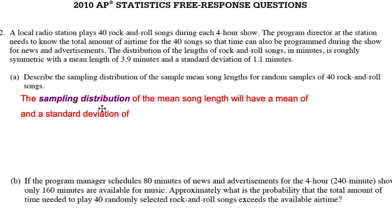Looking at this, the sampling distribution of the mean song length—notice I'm just using the same words that are in the question. The sampling distribution of the mean song length will have a mean of, well, when you take a sample and you find the mean from a population that has a mean of 3.9, your sampling distribution should also have a mean that is equal to whatever the population is.